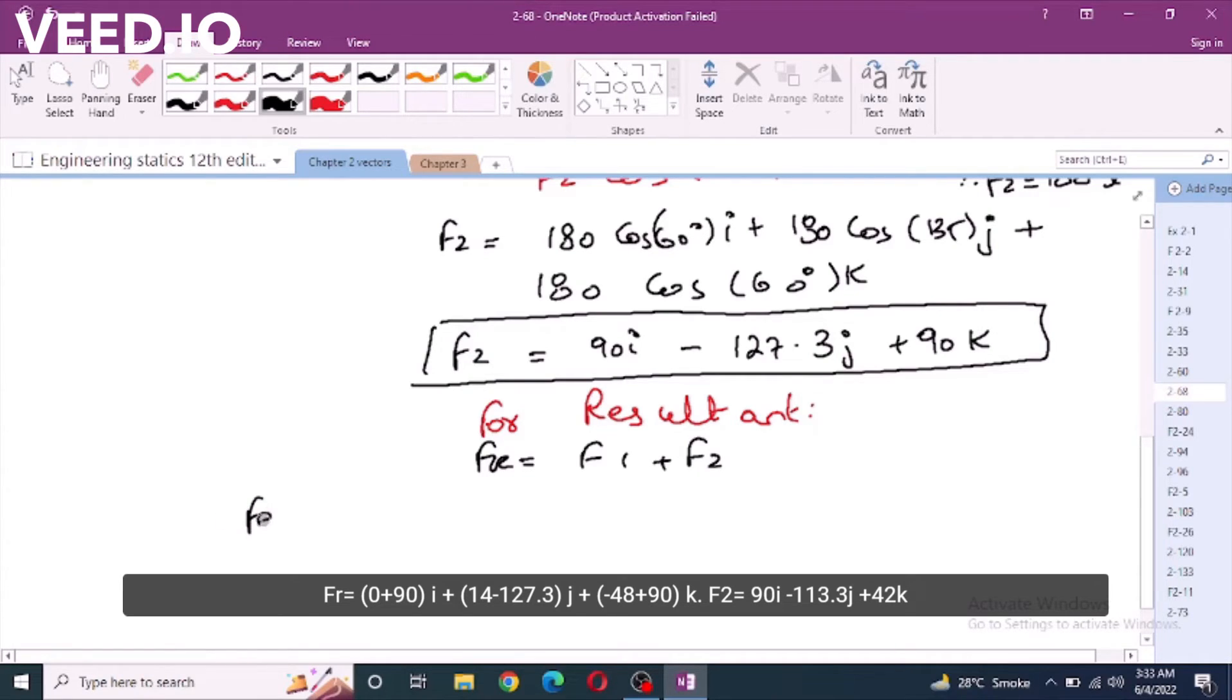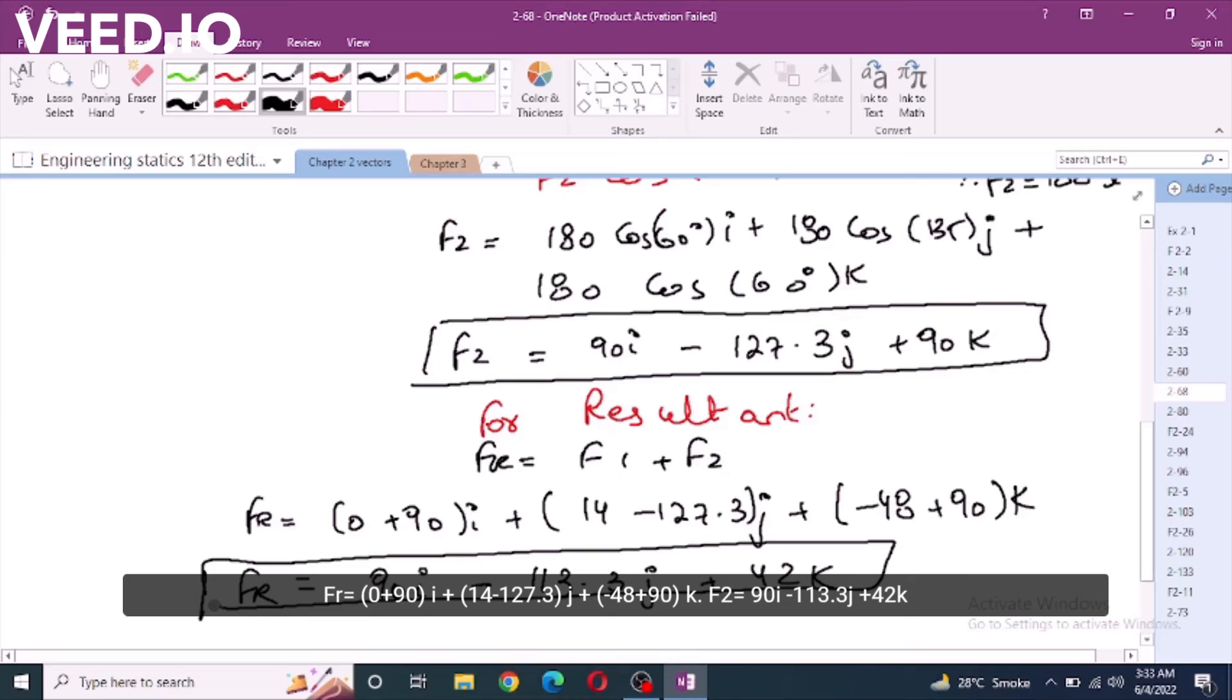FR equals 0 plus 90i plus 14 minus 127.3j plus negative 48 plus 90k. FR equals 90i minus 113.3j plus 42k in lbs.